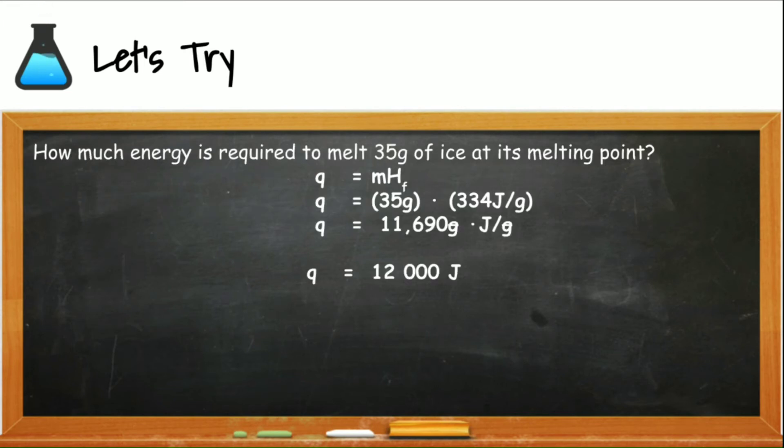You will find the equation you need to use on reference table T. Again, the keywords here are melt and ice. Then we'll substitute. After you substitute, you can solve algebraically. Now, because the number 35 has two significant digits, I'll round my answer to the proper number of significant digits, which is 12,000 joules or 12 kilojoules.